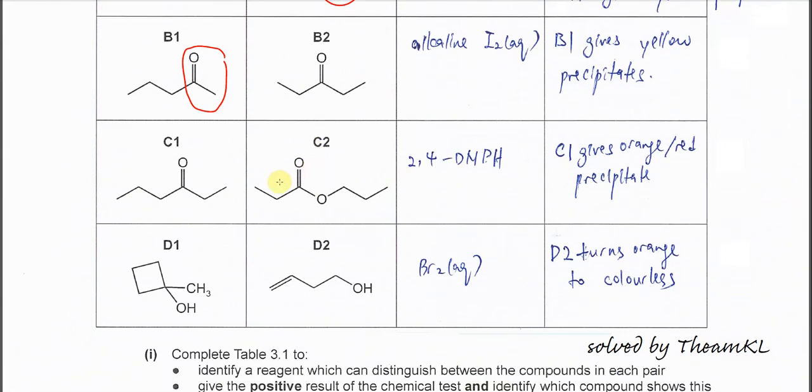Next part, C1 and C2. This one is ester, C2. C1 is the carbonyl group here, so the ketone. So we can use 2,4-DNPH to distinguish them. C1, which has the carbonyl group, will give orange or red precipitate.